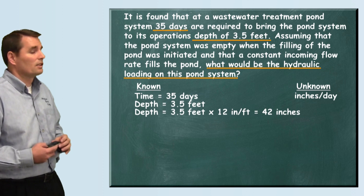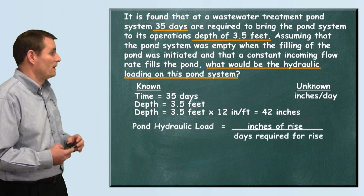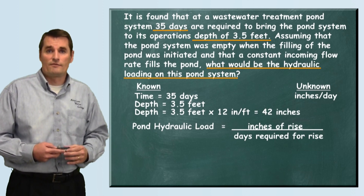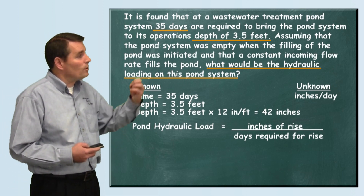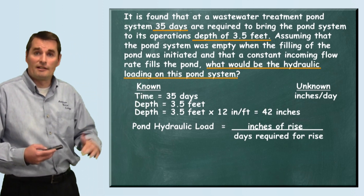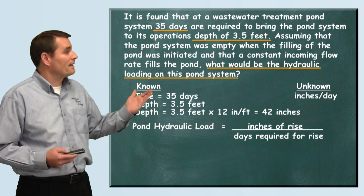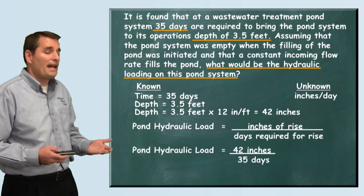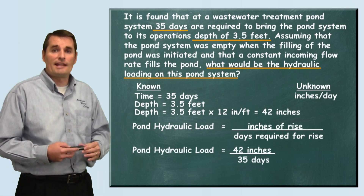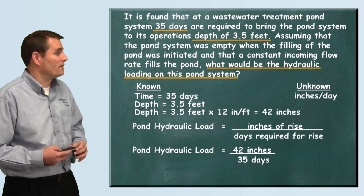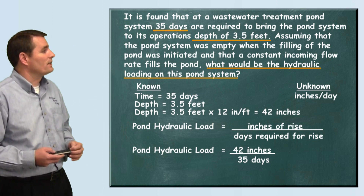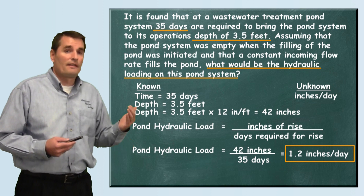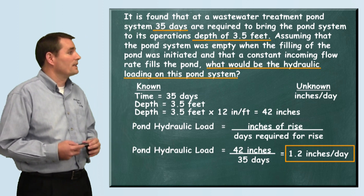The pond hydraulic loading formula is as follows: inches of rise divided by days required for the rise. Now that we've pulled all the information out and calculated our total inches in the pond, we simply take the inches of rise, which is 42, and divide it by how long it took to get that increase, 35 days. When we divide 42 inches by 35 days, we find that our answer is 1.2 inches per day.